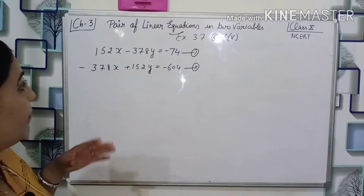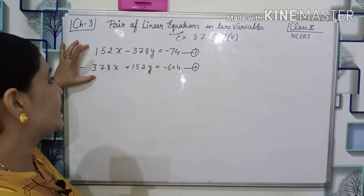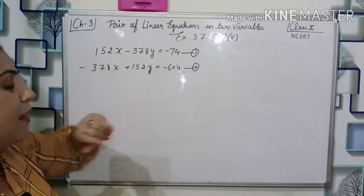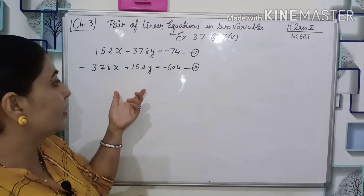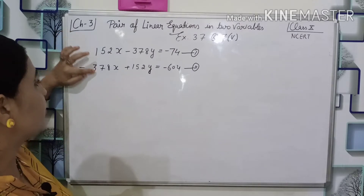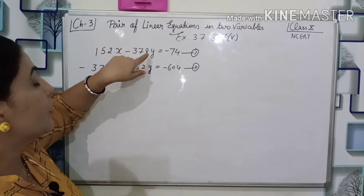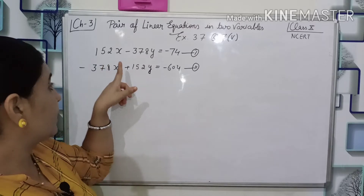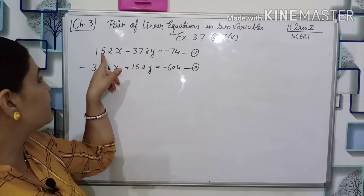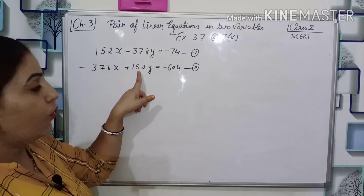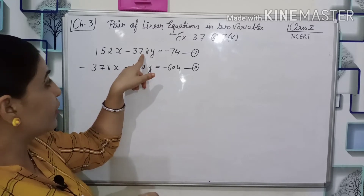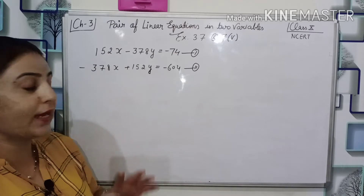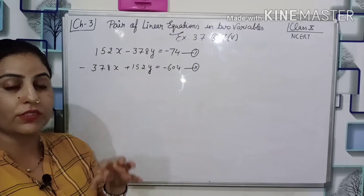I always use the elimination method, so I am going to use elimination here. But notice — the coefficients here are large numbers like 152 and 378. If I try to directly use elimination, I would have to multiply by 378, giving very large multiplications. So here is a special case: when the coefficient of x in the first equation is the same as the coefficient of y in the second equation, and vice versa — that is, the coefficients are swapped — we can apply a special rule to shorten these large equations.